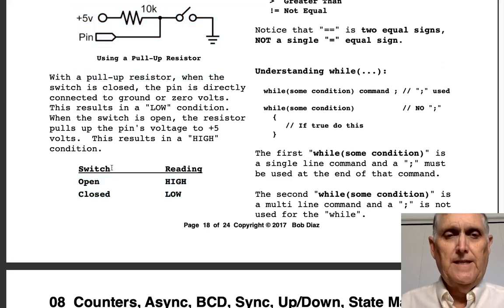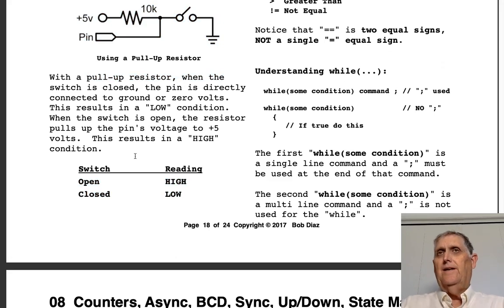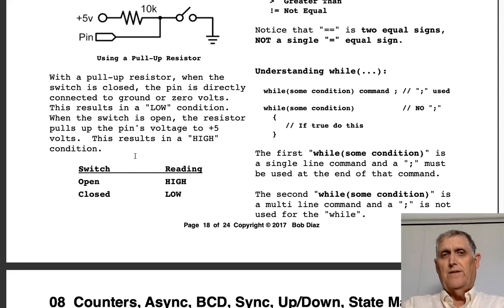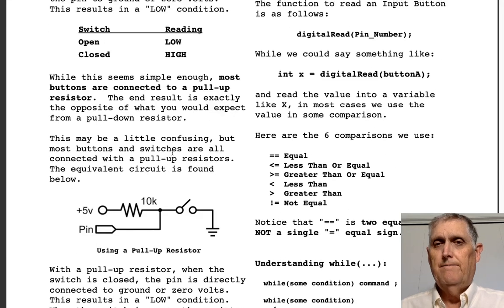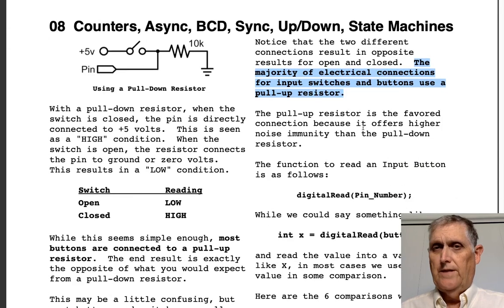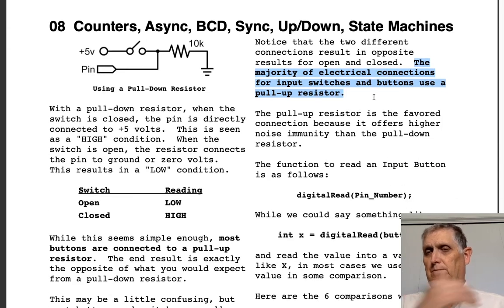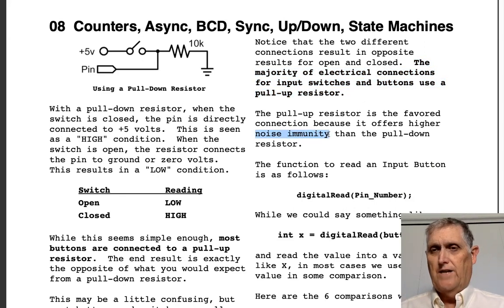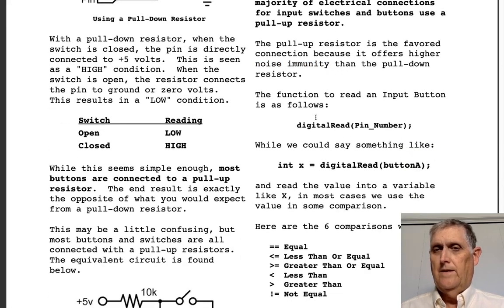In the beginning it's a little hard to wrap your head around. Just remember: pull-up resistors are used 99.9% of the time. The majority of electrical connections for input switches and buttons use a pull-up resistor — it's the favored connection because it offers higher noise immunity.